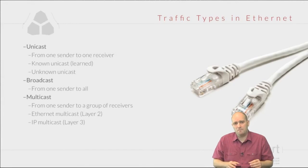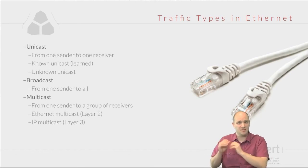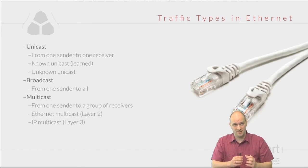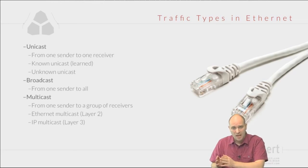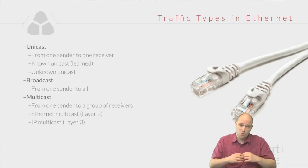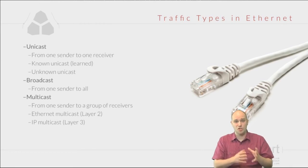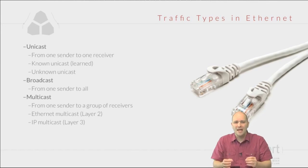Broadcast traffic is from one to all. It is important to distinguish between broadcast traffic and unknown unicast flooding. Unknown unicast flooding is an operation the switch performs to simulate the original yellow cable. Broadcast traffic is a functionality of Ethernet that allows stations to communicate one to all — it is fundamental for Ethernet operation because many protocols rely on it.